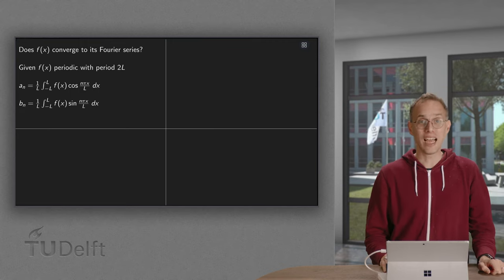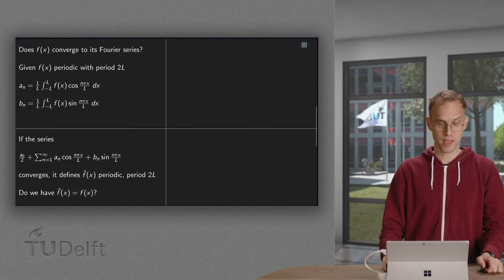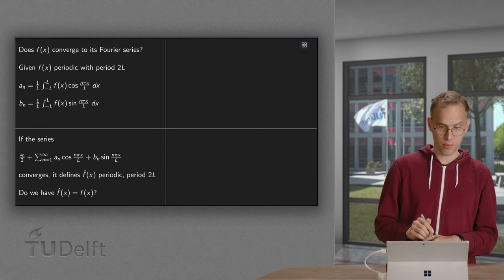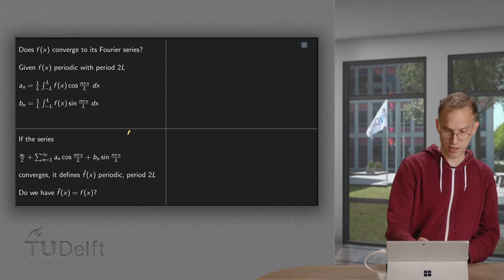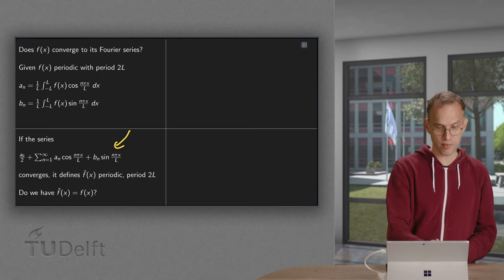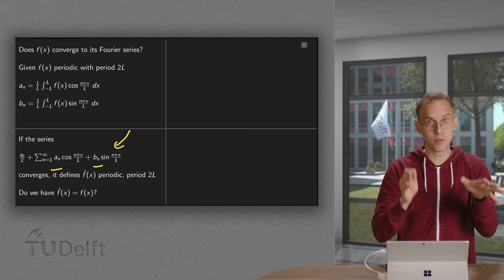But suppose we can compute those coefficients a_n and b_n. Now, what do we do then? Then we can form a series. a_0 over 2, and we have the a_n and the b_n, so we can form a series.